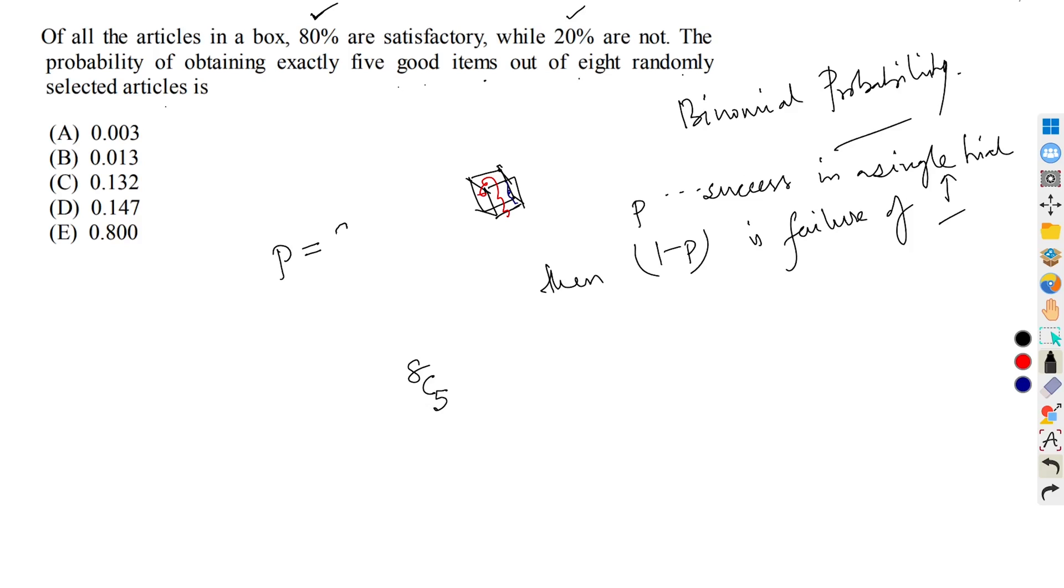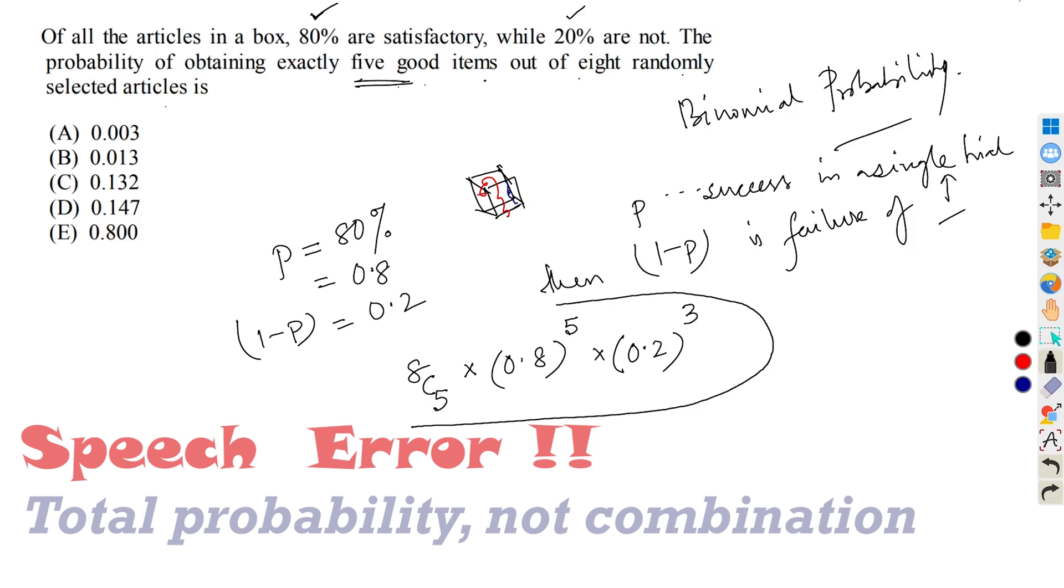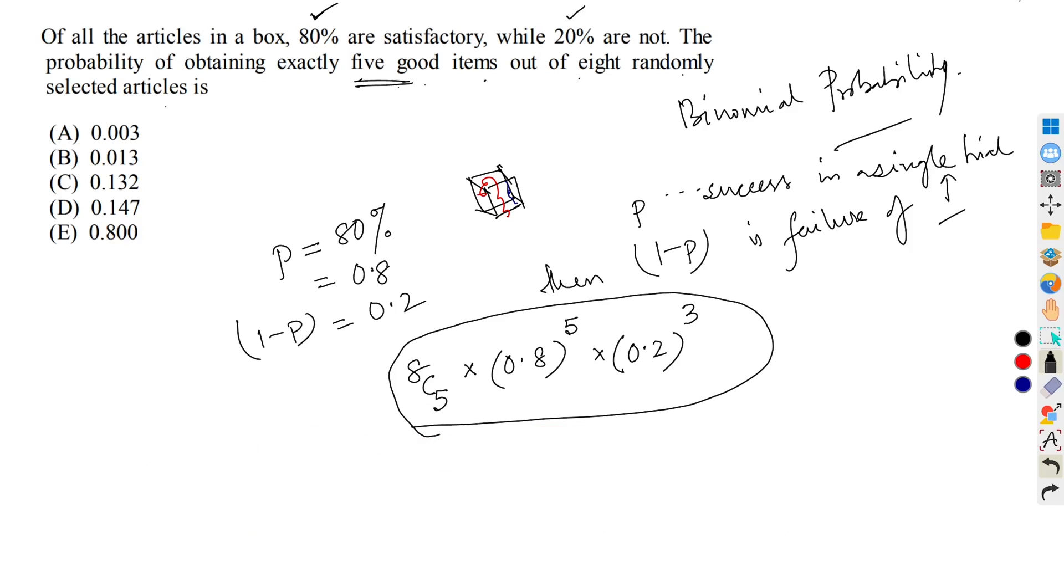The success is we need the success from the 80 percent satisfactory articles. Therefore the value of p here is 80 percent, that is 0.8. Similarly, 1 minus p is the failure, this gives 0.2. Therefore, the success we need 5 times, because we need 5 good items, and 3 should be failure. This is the total combination in which we can select 5 good items out of 8 randomly selected articles.